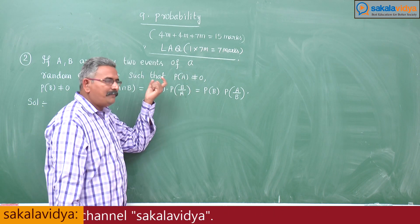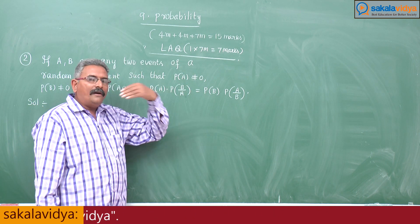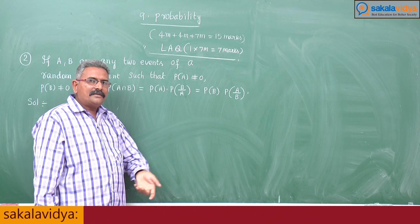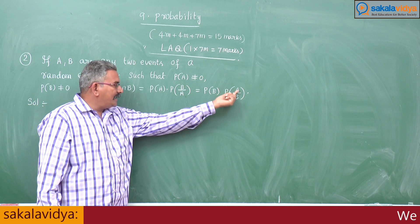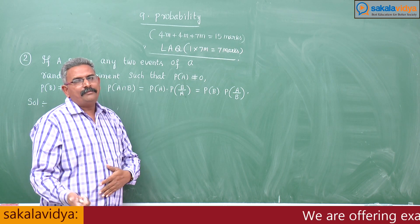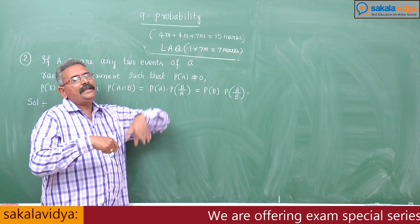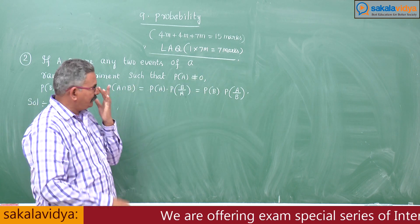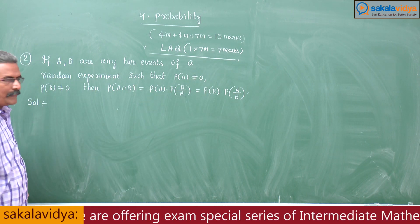What is meant by B conditioned on A? It means after the occurrence of A, B occurs. What is meant by A conditioned on B? It means after the occurrence of B, A occurs. So let us prove it now.